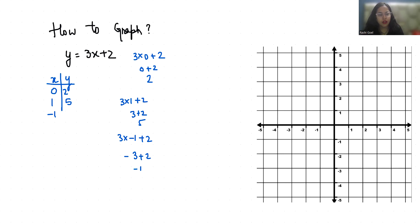So our coordinates are 0 comma 2, 1 comma 5. These are the coordinates of x and y. First is x axis and second is on y axis: minus 1 comma minus 1. So let's place these points.